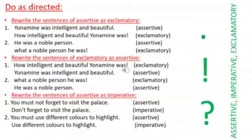Do as directed. Let's see here. Rewrite the sentences of assertive as exclamatory. Yonamin was intelligent and beautiful. You have to change this assertive sentence which declares something to exclamatory sentence. See here. How intelligent and beautiful Yonamin was. Next, he was a noble person. What a noble person he was. This is the exclamatory sentence. Same way you can see the next one.